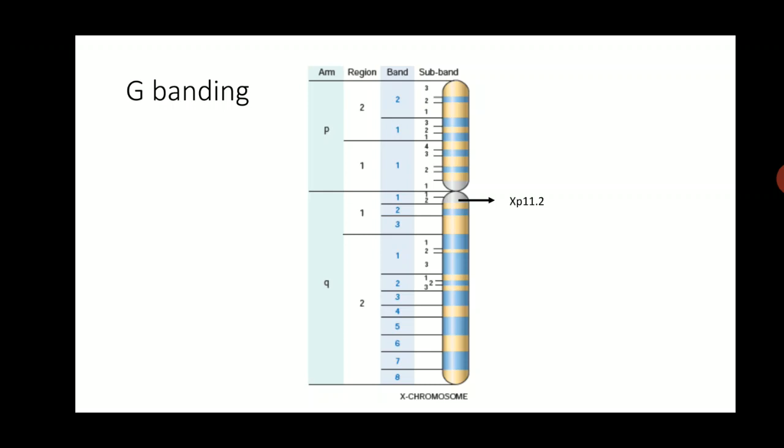Each of these bands have areas known as sub-bands. The location of a particular gene can be expressed in the form of a notation such as XP11.2, which refers to a location on the X chromosome, short arm, region 1, band 1, and sub-band 2. You should read this as XP eleven point two. G banding is a technique where chromosomes are stained with a stain called Giemsa, hence the name G.